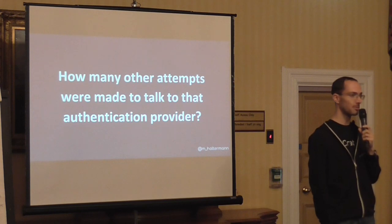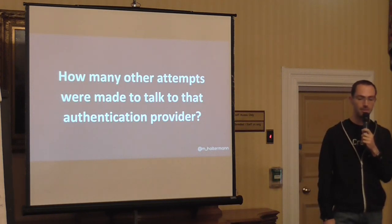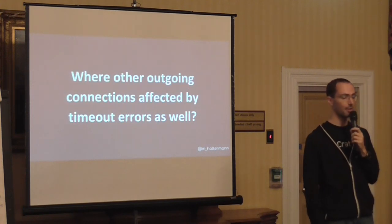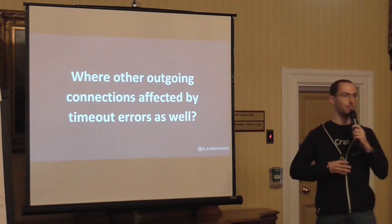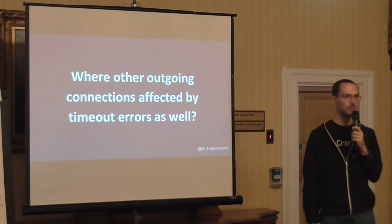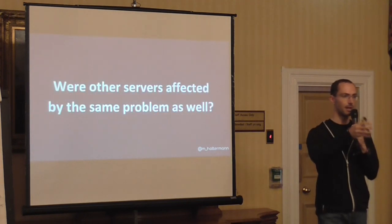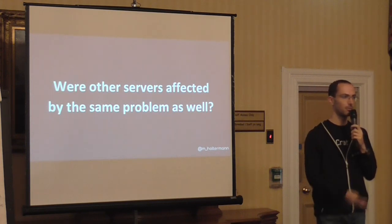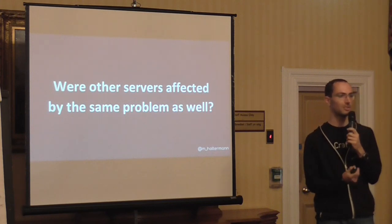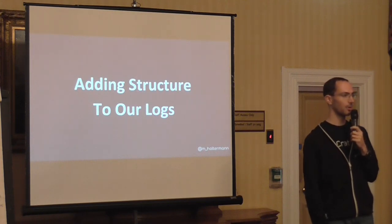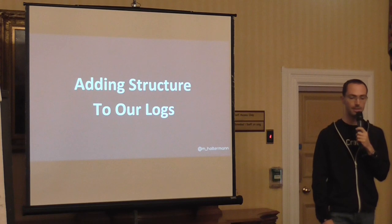When I have a million messages within an hour, finding one or two particular messages in there is going to be really tough. But even more important: were there other outgoing connections affected? Was it just this connection this one time where our server tried to contact Google? Or was it the entire server fleet not being able to connect to the internet? Maybe the network interfaces are broken. Were other servers affected, or was it this one server because the hardware failed? This is important to know to figure out how to address the problem. And I think we can help fix this when we add a bit of structure to our logs.